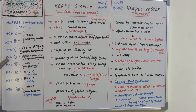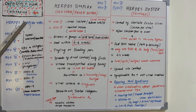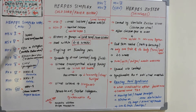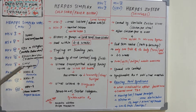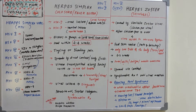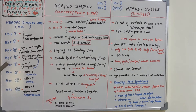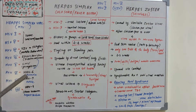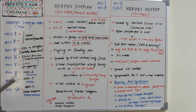Human herpes virus 4 is Epstein-Barr virus, which causes infectious mononucleosis, also known as kissing disease. Human herpes virus 5 is cytomegalovirus, which also causes mononucleosis. Human herpes virus 6 causes roseola, HHV7 also causes roseola, and human herpes virus 8 causes Kaposi's sarcoma.